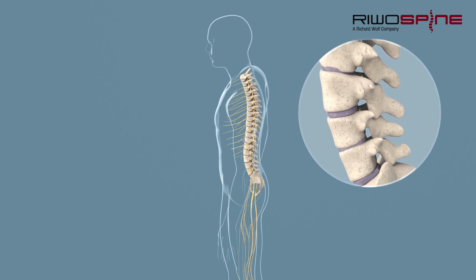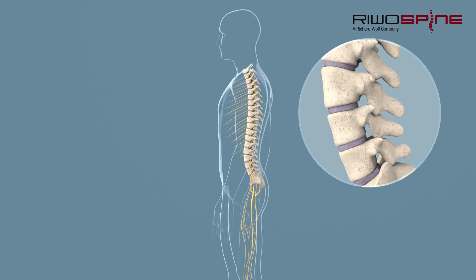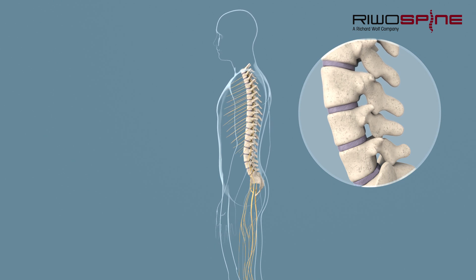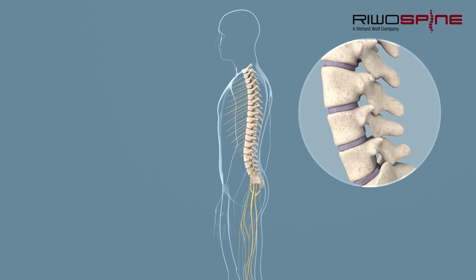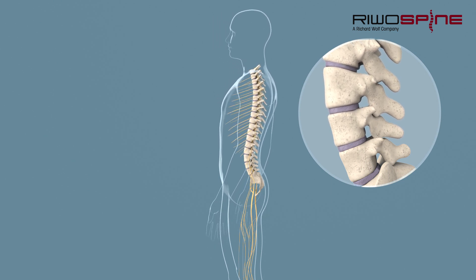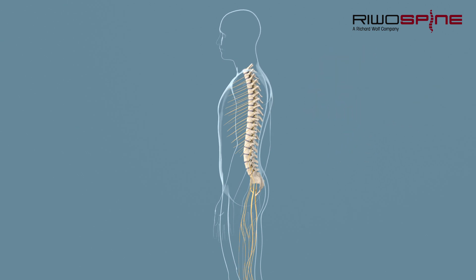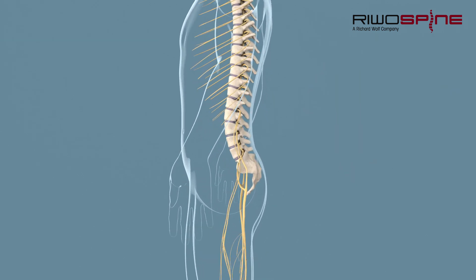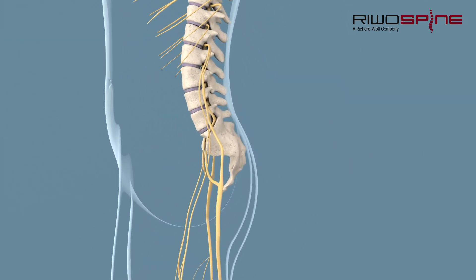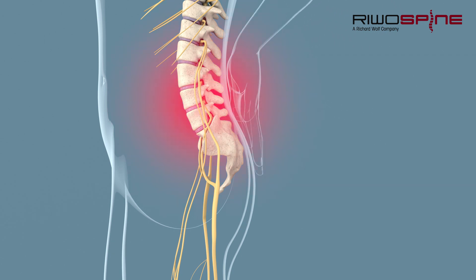As a connection between the individual vertebral bodies and due to their soft structure, they are an important component of the function of the spinal column. Various causes can promote wear and tear of certain structures or lead to certain pain symptoms of the spinal column.